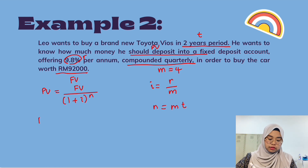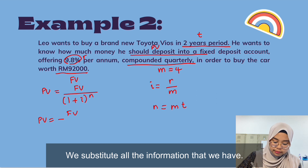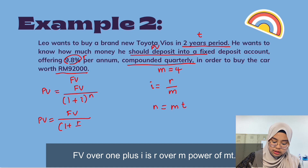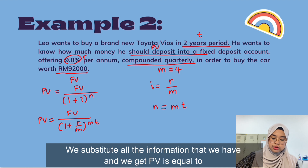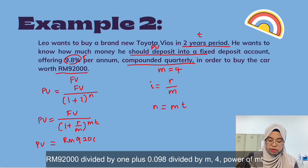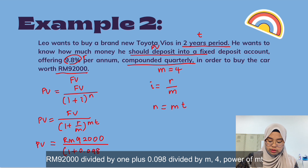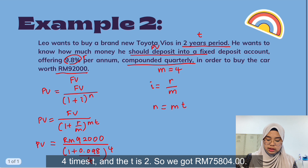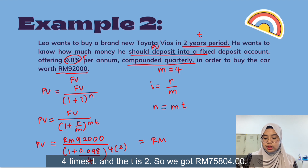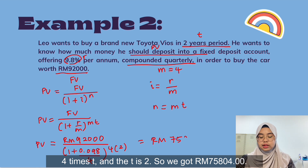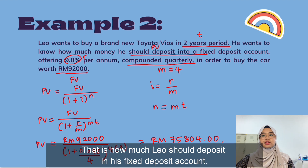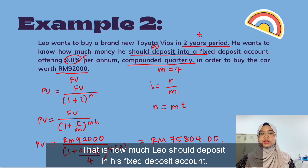We know that i equals r over m and n equals m times t. Substituting all the information: PV equals RM92,000 divided by (1 plus 0.098 divided by 4) to the power of (4 times 2). Calculating this gives us PV equals RM75,804. That is how much should be deposited into the fixed deposit account today.